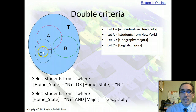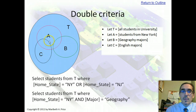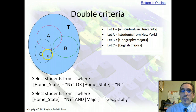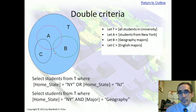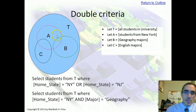C represents English majors. They're all within the university, but not all students are English majors. We see a little overlap between C and A, meaning that some New York students are English majors. But notice that we don't see any overlap between B and C — there are no students who are both geography and English majors. The Venn diagram allows us to see these relationships, and this is a way of thinking about using compound queries.